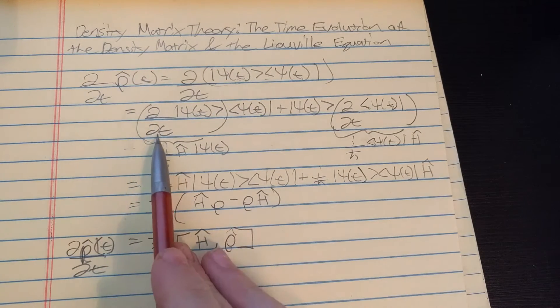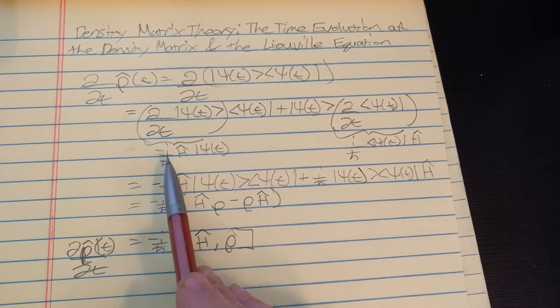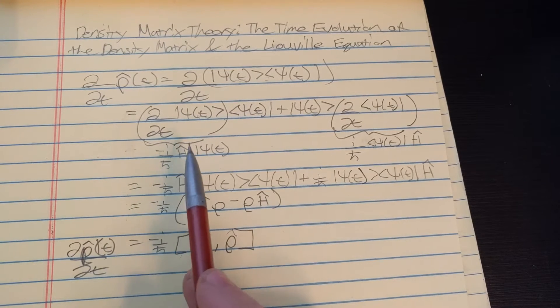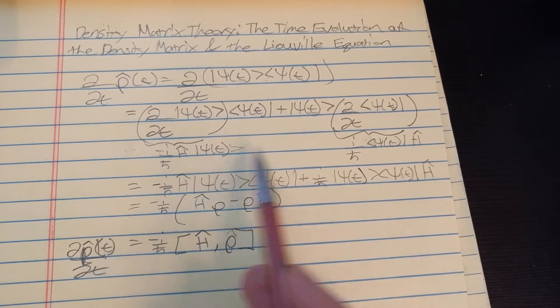And we notice that the time derivative of the wave function is equal to negative i over h-bar times the Hamiltonian times the wave function.